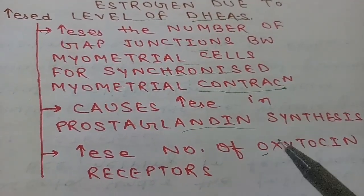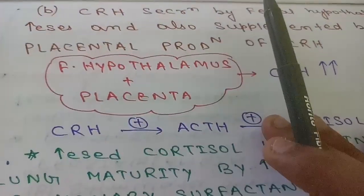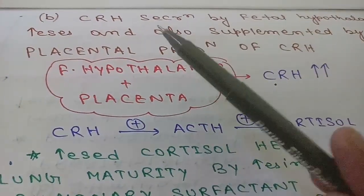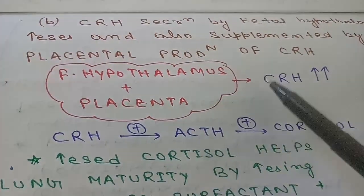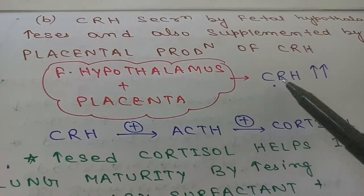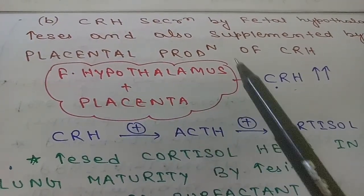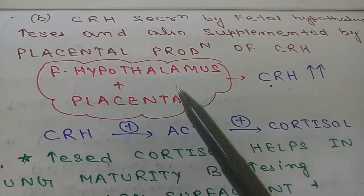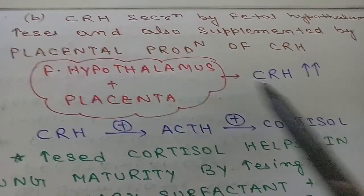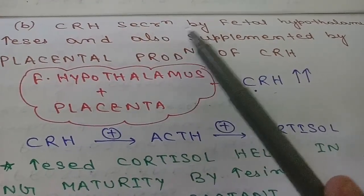Now coming to the second part of this mechanism: CRH secretion. Corticotropin releasing hormone amount will also increase before parturition due to two sources. Fetal hypothalamus will increase secretion of CRH, and placenta will also supplement the amount of CRH. So CRH secretion by fetal hypothalamus increases and is also supplemented by placental production of CRH.